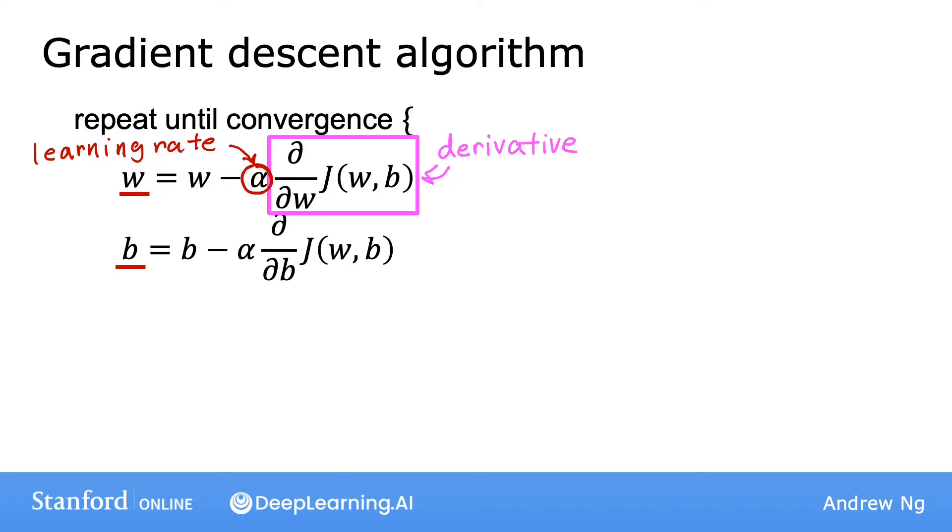So what we're going to focus on now is getting more intuition about what this learning rate and this derivative are doing and why, when multiplied together like this, it results in updates to parameters w and b that make sense. In order to do this, let's use a slightly simpler example where we work on minimizing just one parameter.